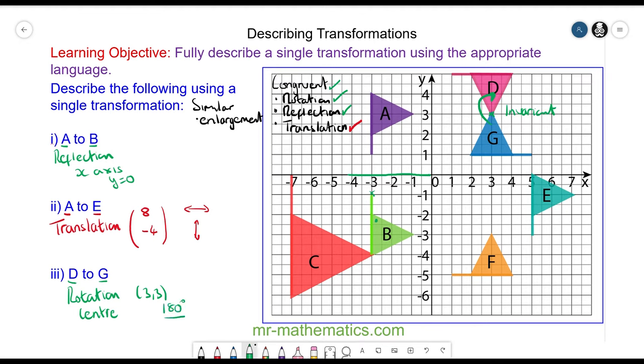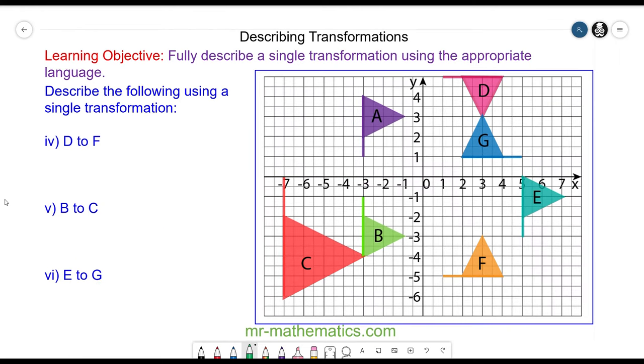Let's move on to question 4. Do you want to make a copy of this grid on square paper and then try and describe the transformation that maps D onto F, B onto C and E onto G. You can pause the video and resume it when you're ready.